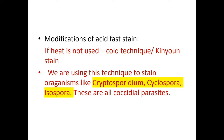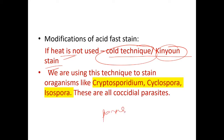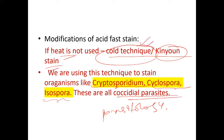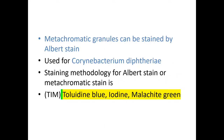There are also modifications of acid-fast staining. If heat is not used, the cold technique — known as Kinyoun staining — is used. Kinyoun stain is used in parasitology for three organisms: Cryptosporidium, Cyclospora, and Isospora. These are all coccidial parasites. Remember: cold technique is used for Cryptosporidium, Cyclospora, and Isospora.